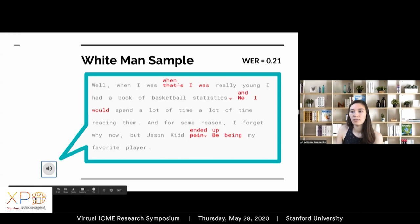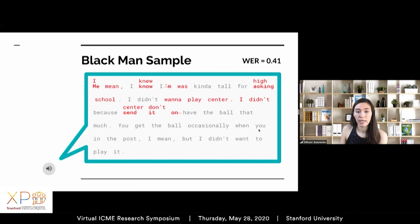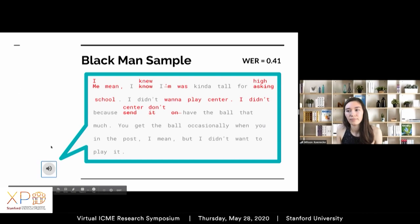Among the ASRs we measured, white men had an average word error rate of around 20% — that was a representative white man's voice clip. Meanwhile, black men had an average word error rate of around 40%, which is double that of white men. A representative voice clip in that word error rate range: 'I knew I was kind of tall for high school. I didn't want to play center because center don't have the ball that much. You get the ball occasionally when you're in the post, but I didn't want to play it.'